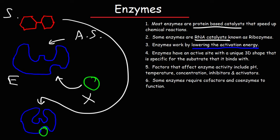An activator is basically the opposite of an inhibitor — it activates the enzyme toward the substrate. In addition, some enzymes require cofactors and coenzymes to function. Cofactors include inorganic metal ions such as the zinc 2+ cation, and coenzymes include organic molecules such as vitamins.